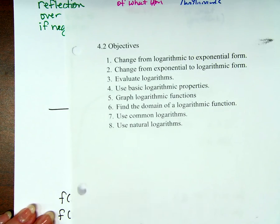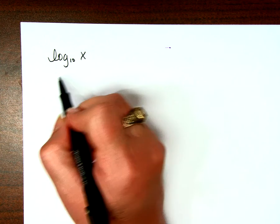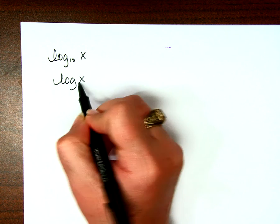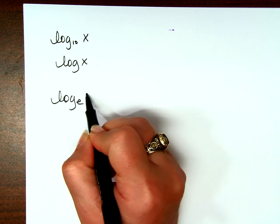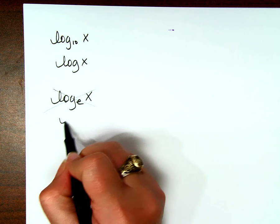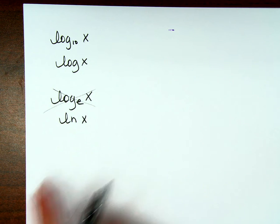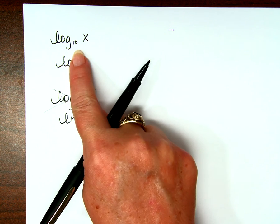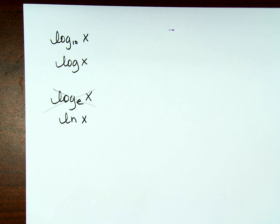Common logs and natural logs, do you remember the difference between the two? Log base 10 of x is the common log. So a lot of times we just write log of x. We don't even write a base. That's the common log. Log base e of x. We don't write that, because we're not silly. We write natural log of x. Natural log just means log base e. This one's called the common log. It's the base used most often. This is called the natural log. It's a base of e.